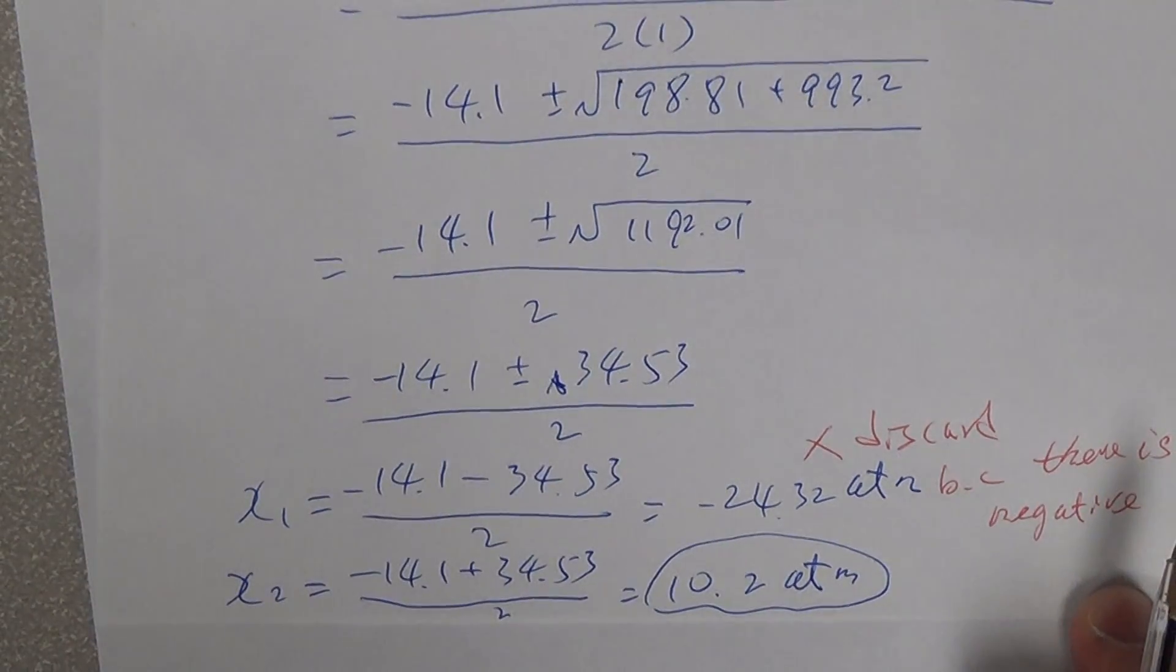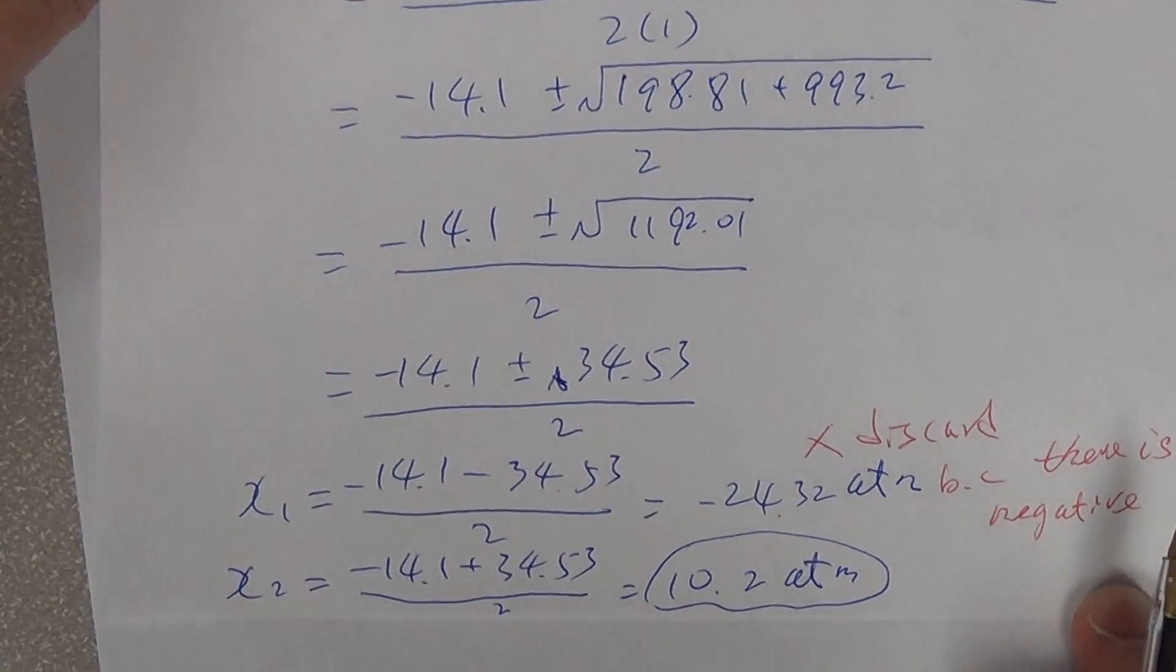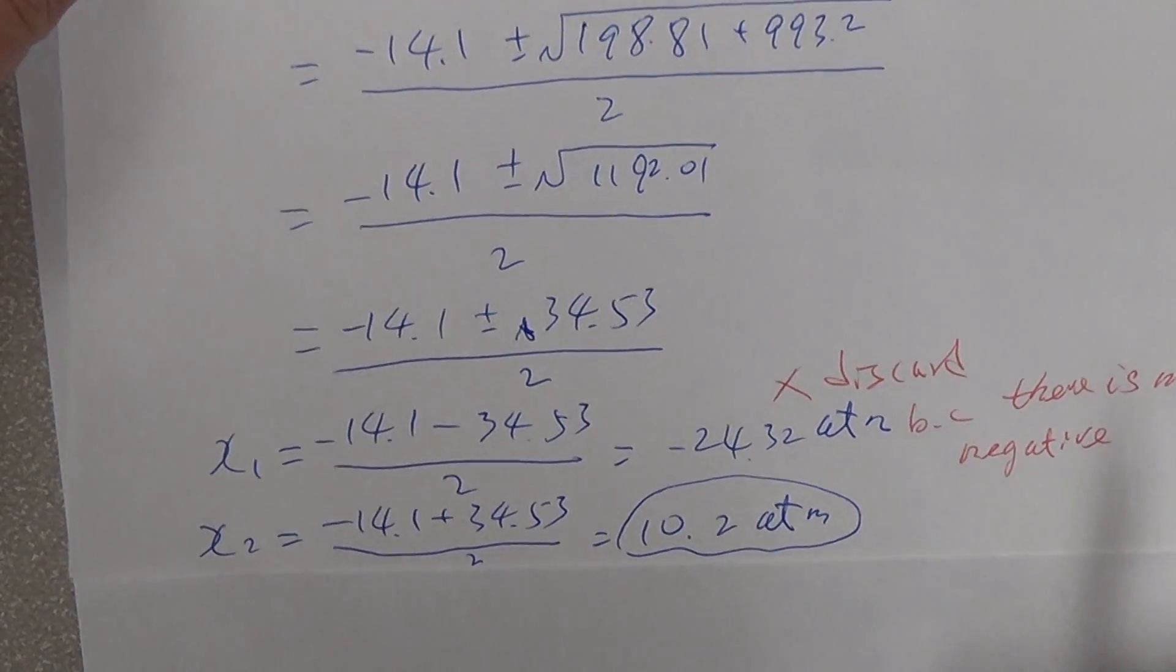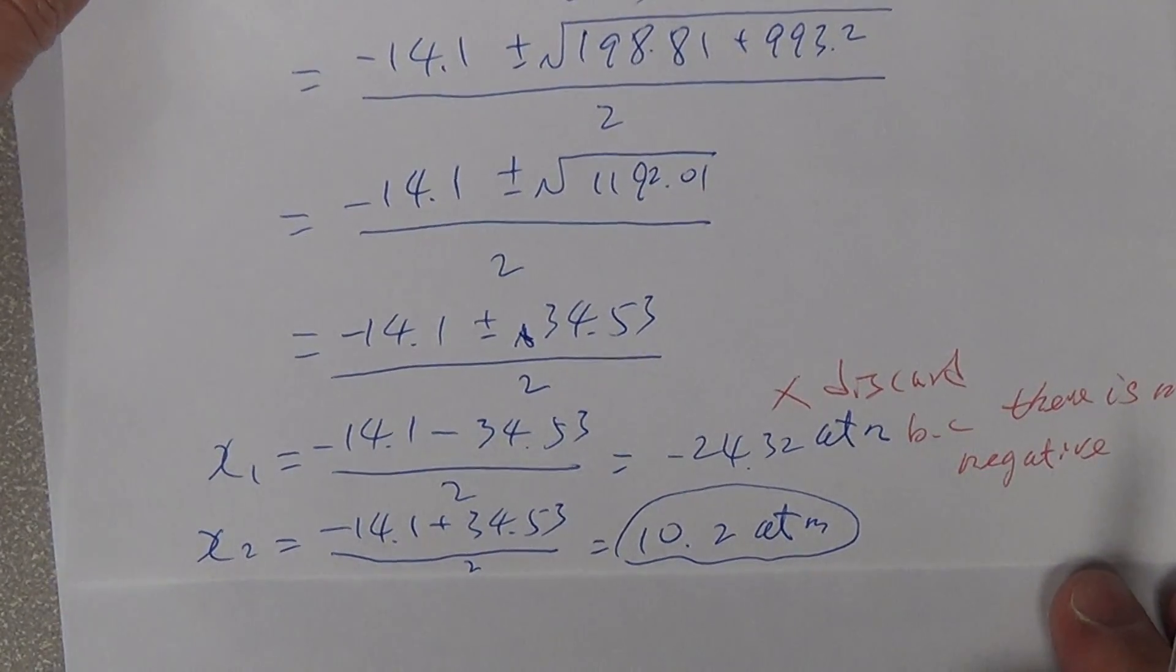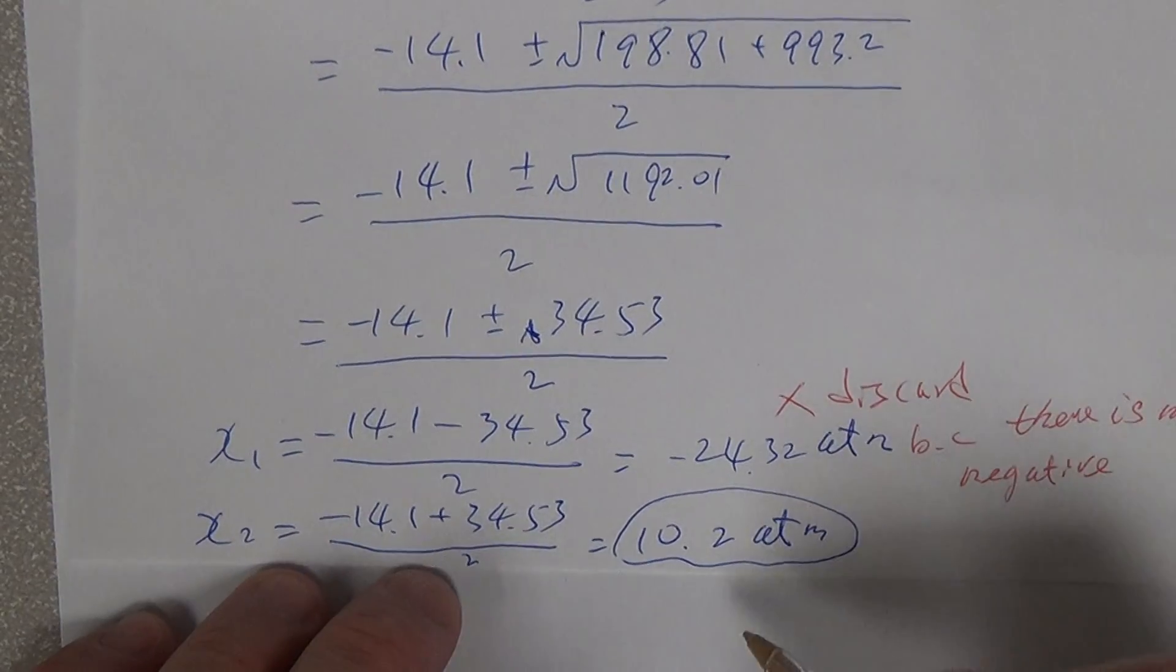But they might get a negative x for those reactants if our reaction is given to the right. So therefore, this will be 10.2.